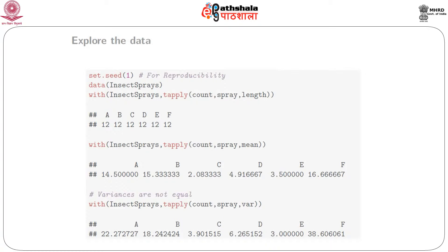Then using 'with(InsectSprays, tapply(count, spray, var))' we calculate the variance of counts for each spray, and we find that the variances are pretty dispersed. For example, variance of F is 38.6, variance of A is 22.2, while variance of E is 3 and variance of C is 3.9. Changing the function to 'length' gives 12 for each group, meaning 12 observations per spray type.